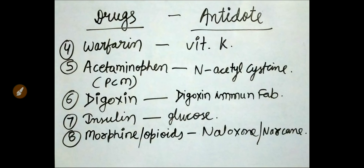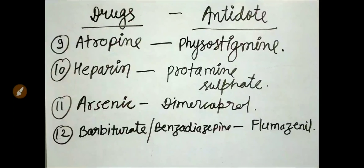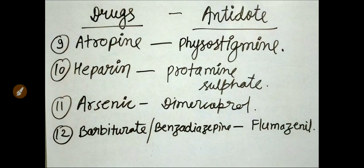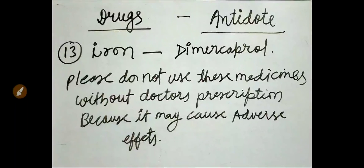Insulin — glucose. Morphine or opioids — naloxone or Narcan. Atropine — physostigmine. Heparin — protamine sulfate. Arsenic — dimercaprol. Barbiturate or benzodiazepine — flumazenil. Iron — dimercaprol.